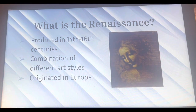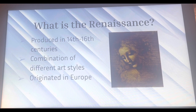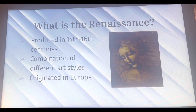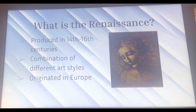So what is the Renaissance? The Renaissance is an era spanning the 14th through 16th centuries, and it is a combination of different art styles. Some of these art styles include humanism, naturalism, and classicism, along with non-religious themes and sculptures. The Renaissance originated in Europe, mostly staying in the areas within Italy and France.